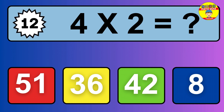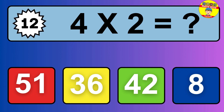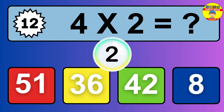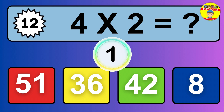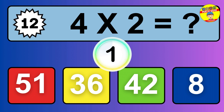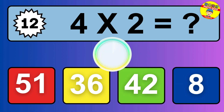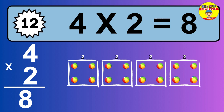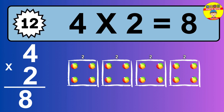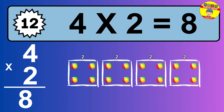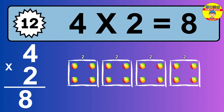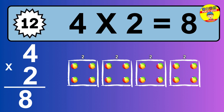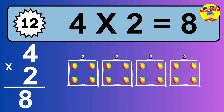Question 12. 4 times 2 equals what? The answer is 4 times 2 is 8. To calculate, we have 4 groups with 2 balls each one. So how many balls do we have? 8 balls.